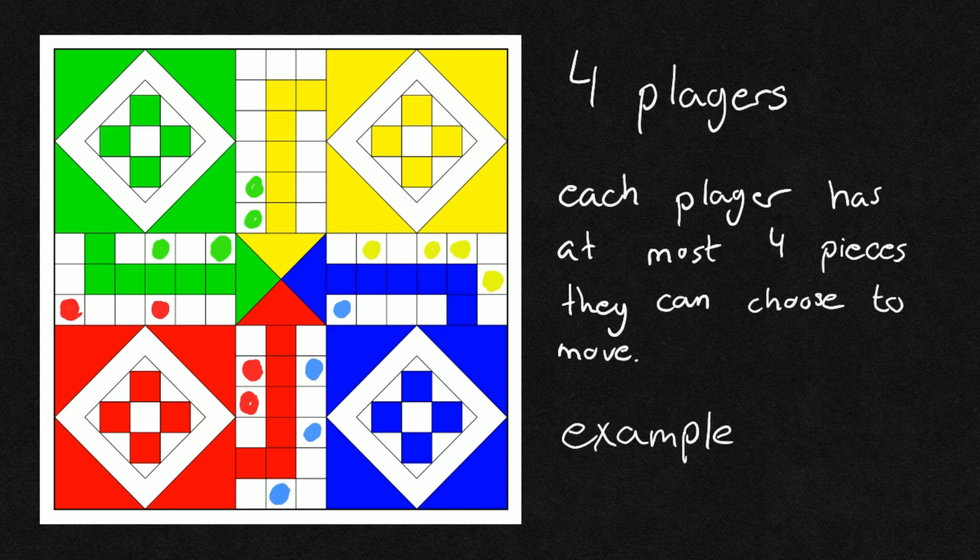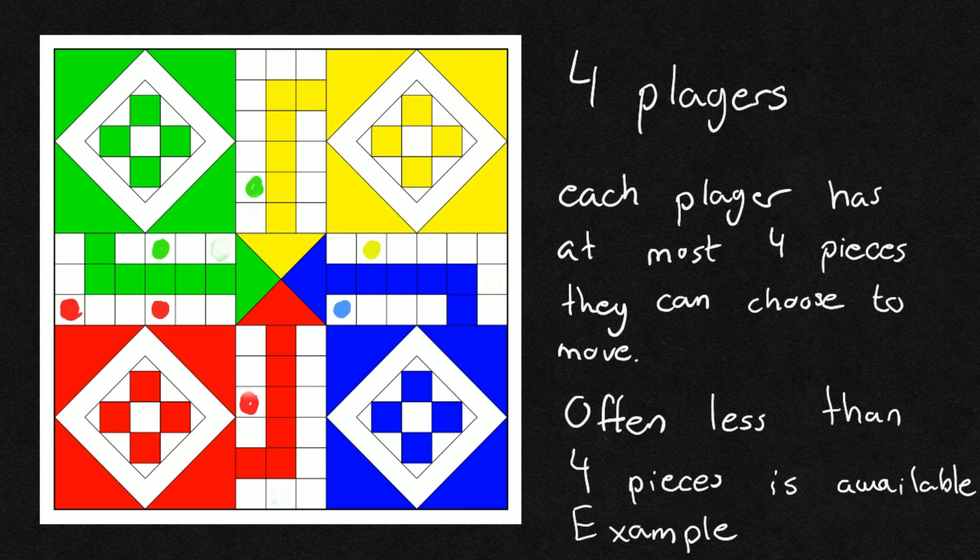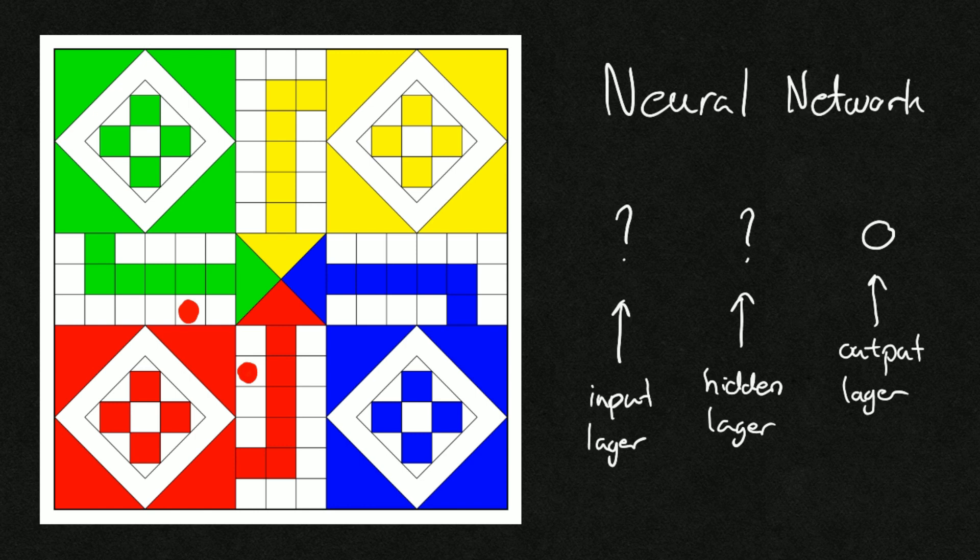However, this is not always the case. There might be two pieces on the board or even one, meaning we can't reliably choose an action knowing it will actually be available. Therefore I chose to only have one output in the neural network. My idea was to use the neural network as sort of an evaluation function that would tell how good it is to move a certain piece.